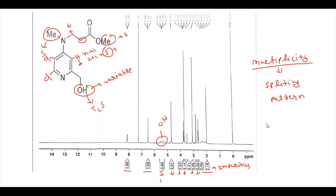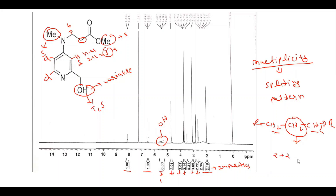I want to ask you about multiplicity. Suppose we have a structure with a CH2 connected to R on both sides. What will be the multiplicity of this central proton? There are 2 protons adjacent on one side and 2 protons adjacent on the other side, so N = 2+2 = 4, and adding 1 gives 5. So the multiplicity is 5 — you can simply call it a multiplet.